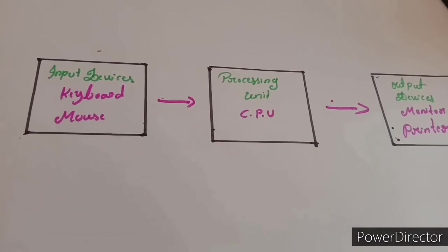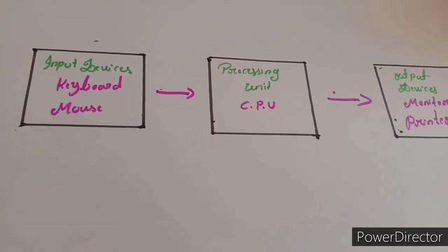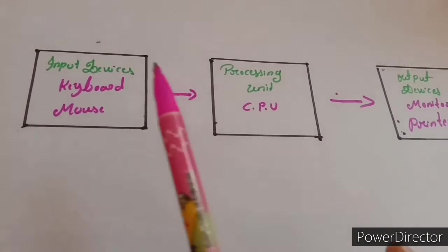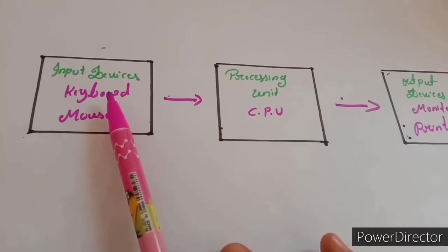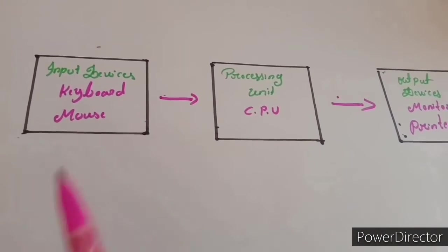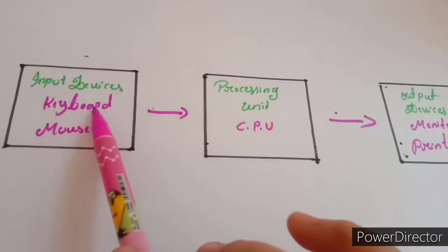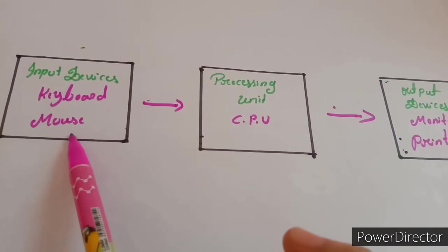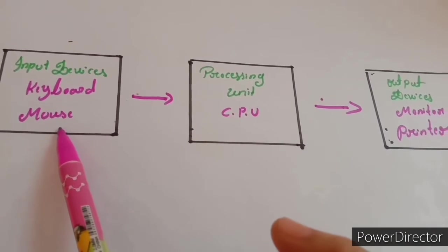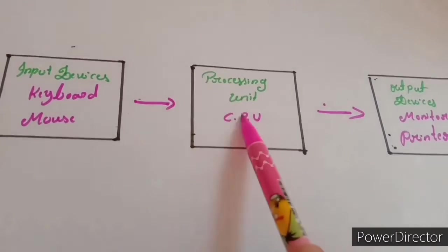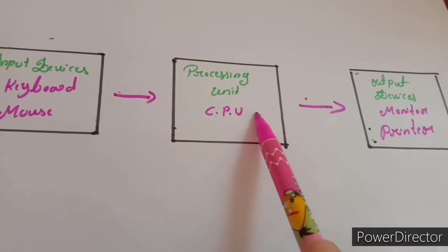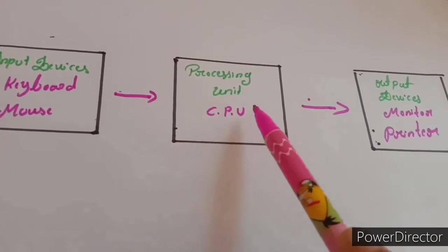In a computer, The keyboard And mouse Are used to Enter Data And instruction Into the Computer. Hence They are Input Devices. Two input Devices are Keyboard And mouse.